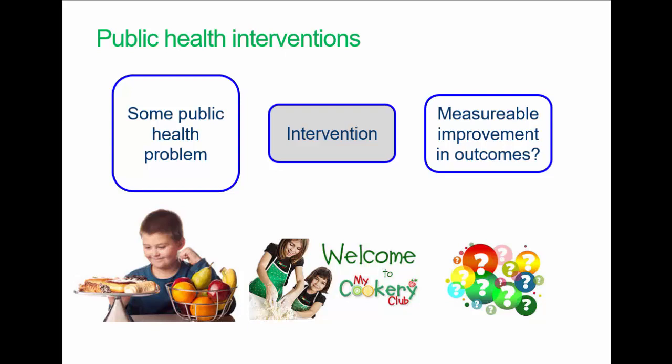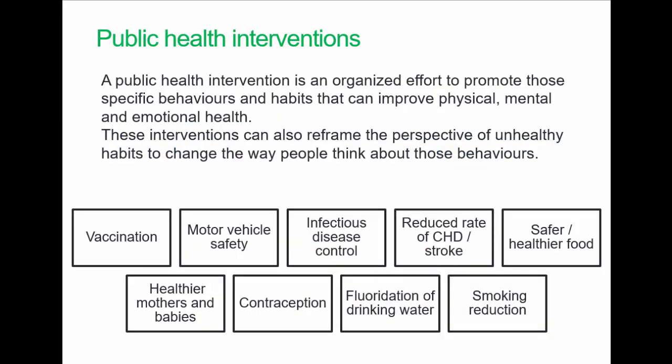We might look at BMI of the population in a particular area, for example. Here are a range of public health interventions. This is the American CDC — the Centers for Disease Control — list of the 10 greatest public health interventions in the last century. They're obviously large-scale, longer national and often international interventions. There are also numerous examples of smaller-scale interventions, such as smoking reduction, for example.